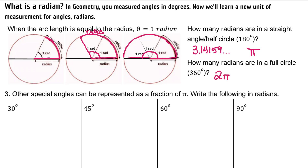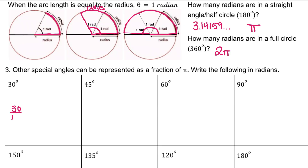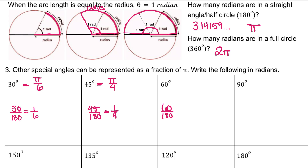Other special angles can be represented as a fraction of pi. 30 degrees is 1/6 of 180, so 30 degrees can be written as pi over 6. 45 degrees is 1/4 of 180, so 45 degrees in radians is pi over 4. 60 degrees is 1/3 of 180, so 60 degrees is pi over 3. And 90 degrees is 1/2 of 180, so pi over 2.